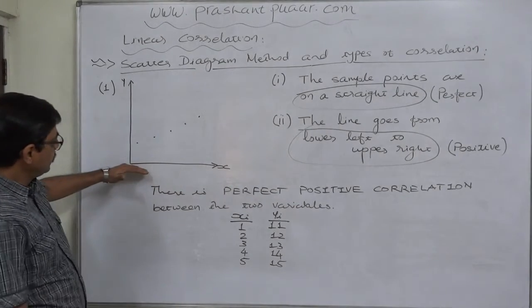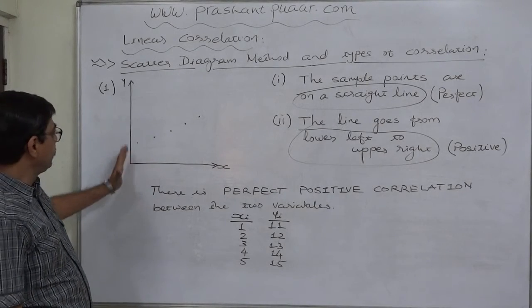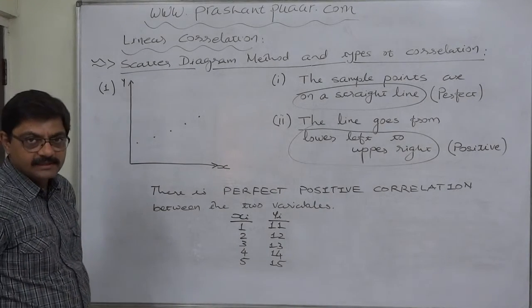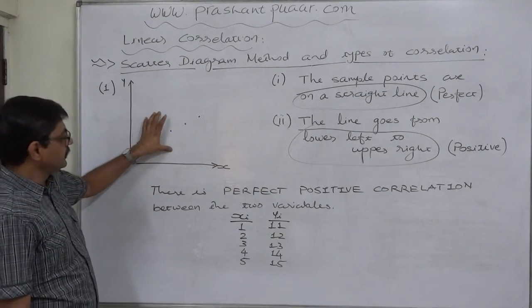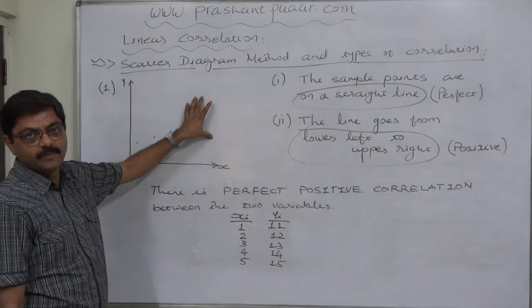Draw independent variable on horizontal axis and dependent variable on vertical axis and simply just put the simple points on the graph paper.